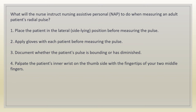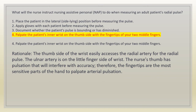What will the nurse instruct nursing assistive personnel (NAP) to do when measuring an adult patient's radial pulse? 1. Place the patient in the lateral side-lying position before measuring the pulse. 2. Apply gloves with each patient before measuring the pulse. 3. Document whether the patient's pulse is bounding or has diminished. 4. Palpate the patient's inner wrist on the thumb side with the fingertips of your two middle fingers. Answer: 4. Rationale: the thumb side of the wrist easily accesses the radial artery. The nurse's thumb has pulsation that interferes with accuracy, so fingertips are the most sensitive parts of the hand to palpate arterial pulsation.